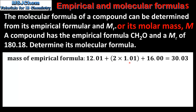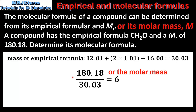The atoms are carbon, hydrogen, and oxygen. If we add these together we get a mass of 30.03. The next step is to divide the relative molecular mass by the mass of the empirical formula.